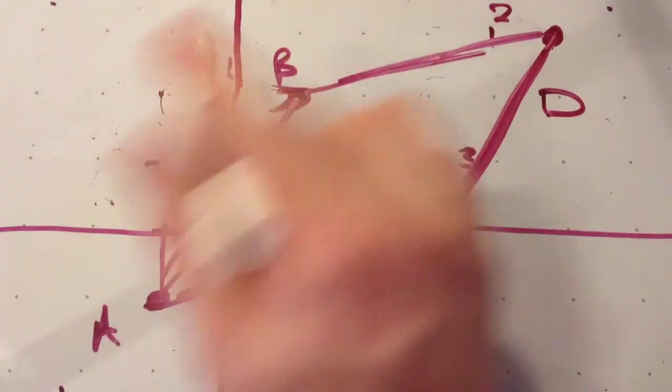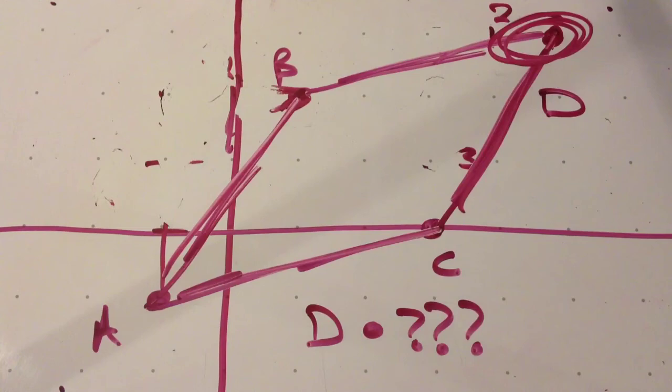We're going to force CD to have the same slope, rise over run, as AB. That guarantees that those sides are parallel, thus creating a parallelogram.